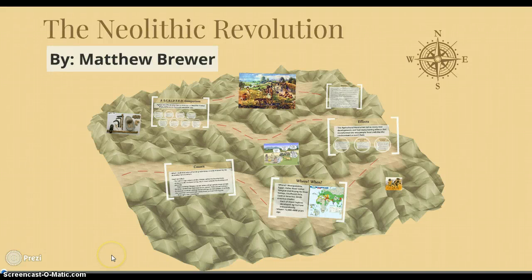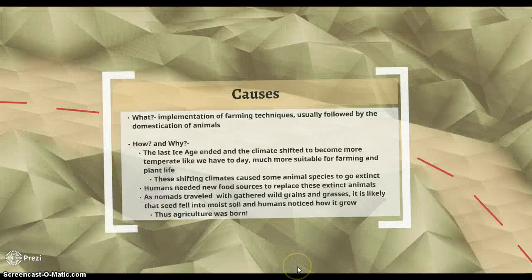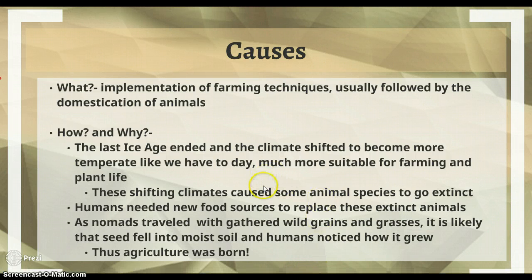Hello. Today I'm going to be talking about the Neolithic Revolution for my AP World History Exam Review. So let's jump right in. First we need to define basically what is a Neolithic Revolution. It was the development of agriculture about 10 to 12,000 years ago, and this was usually followed by the domestication of animals.